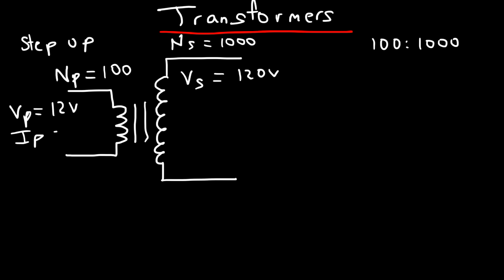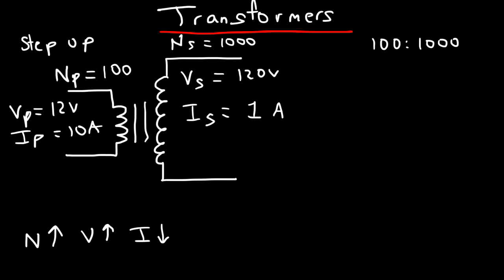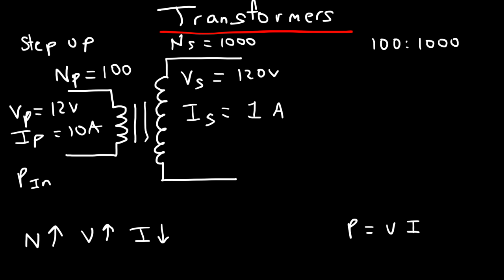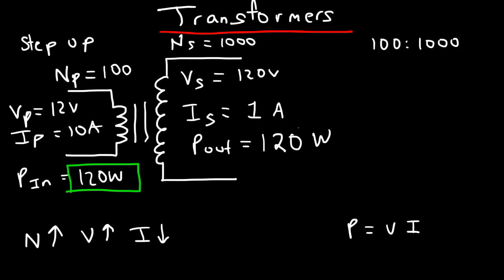Now if the primary current IP is 10 amps, as the number of turns increases from primary to secondary, the voltage increases but the current decreases. The current decreases by a factor of 10, so the secondary current IS is 1 amp. Power equals voltage times current, so the primary power is 12 times 10, which is 120 watts. The secondary power is 120 times 1, also 120 watts.